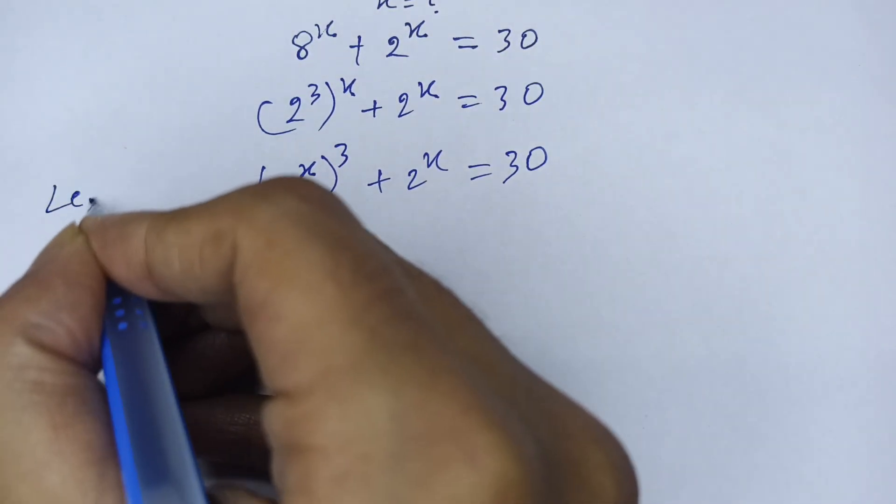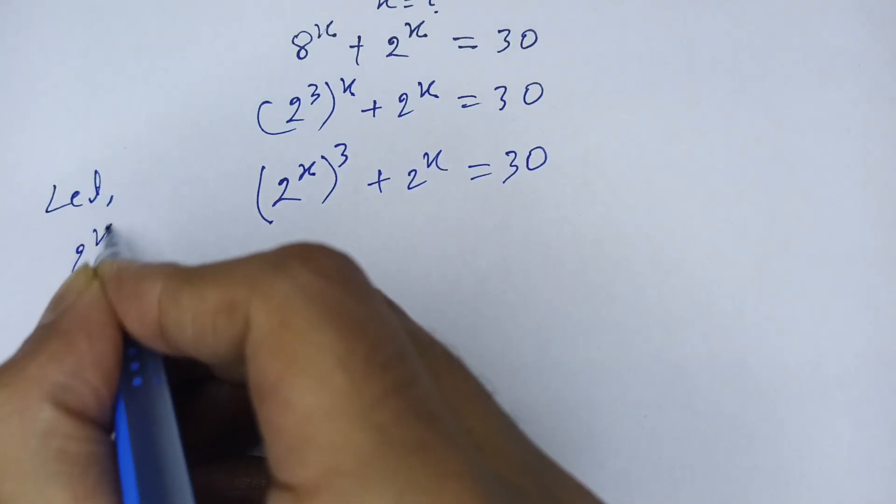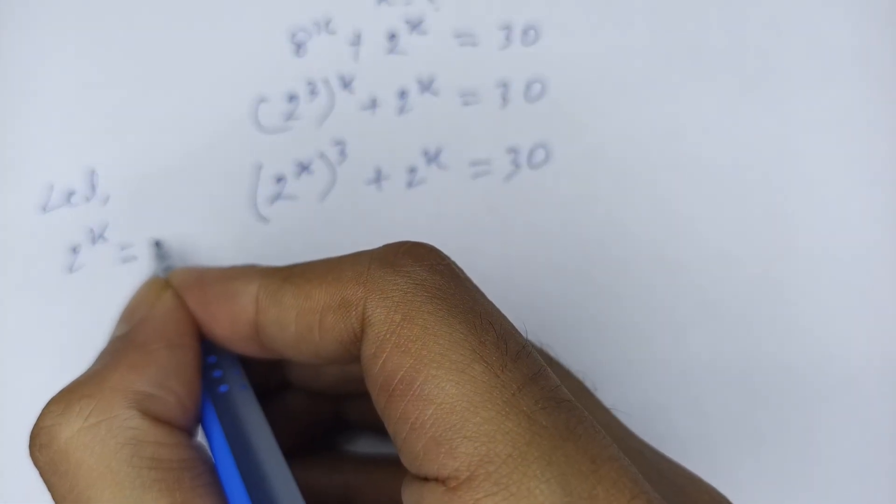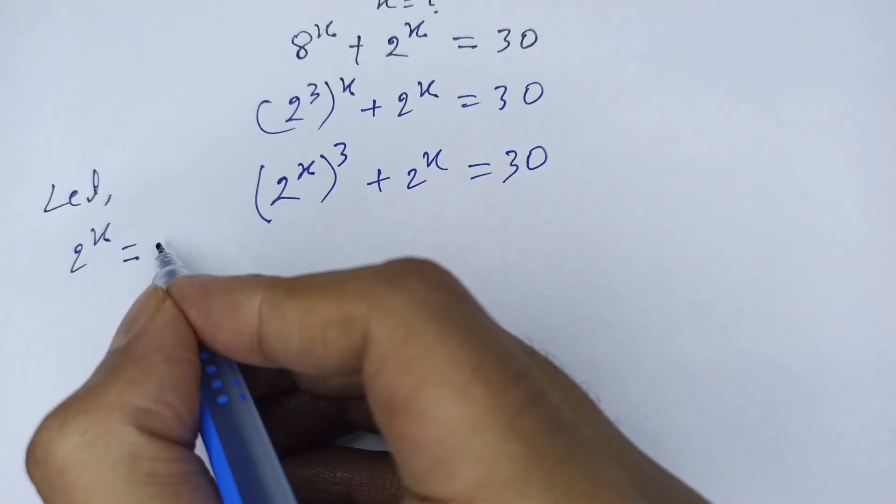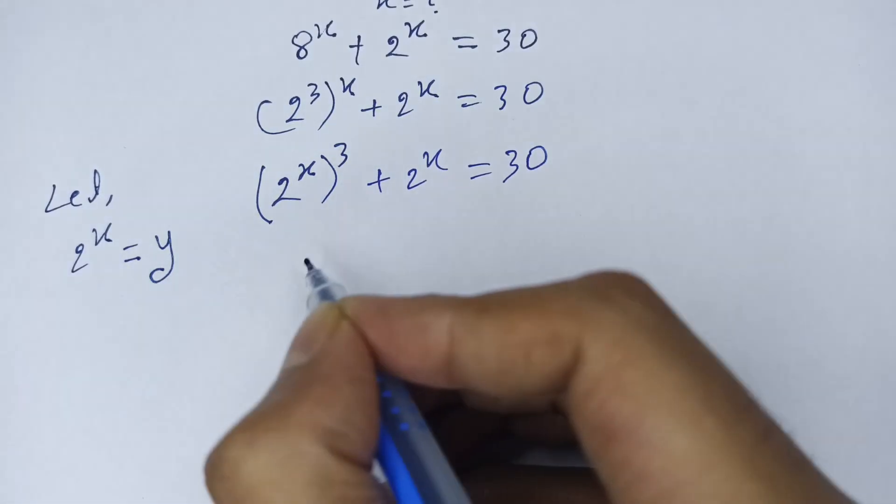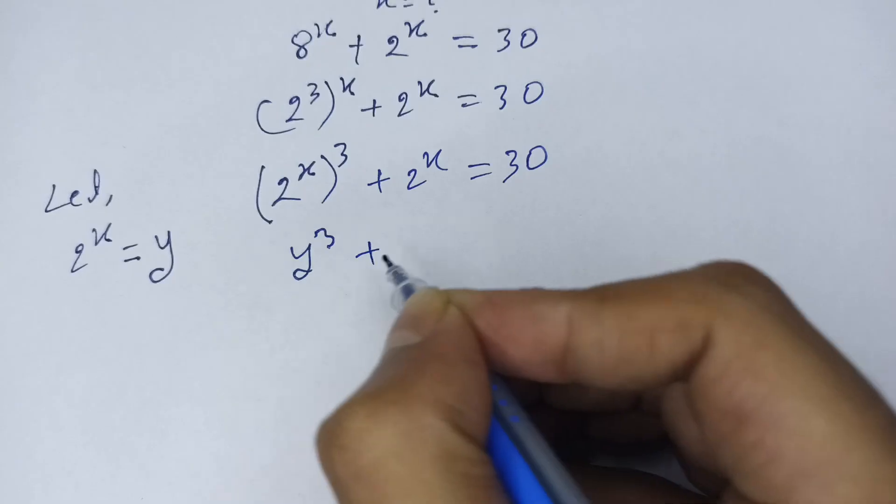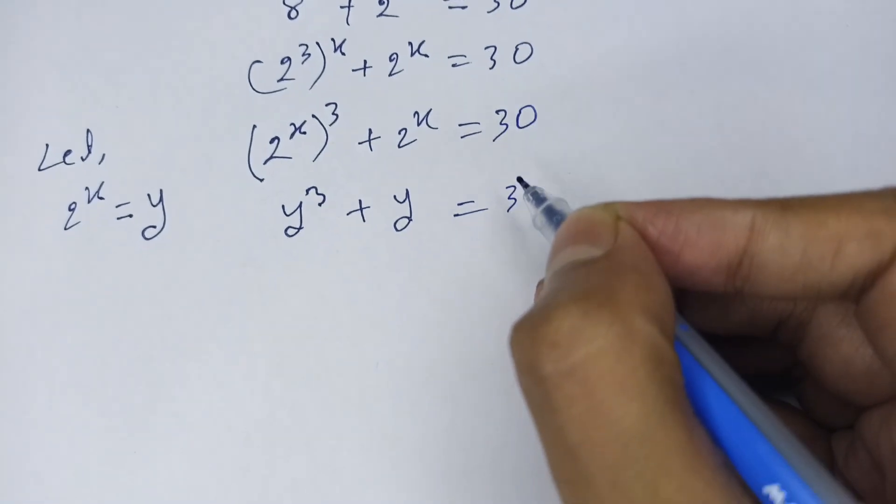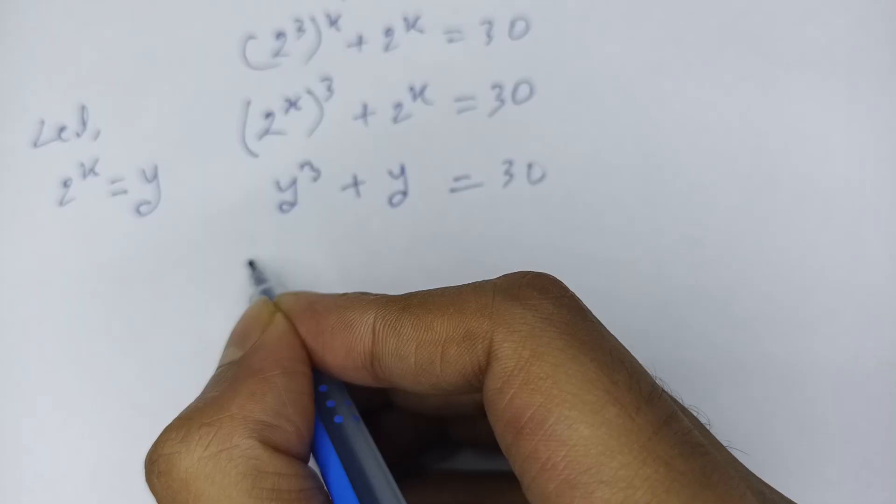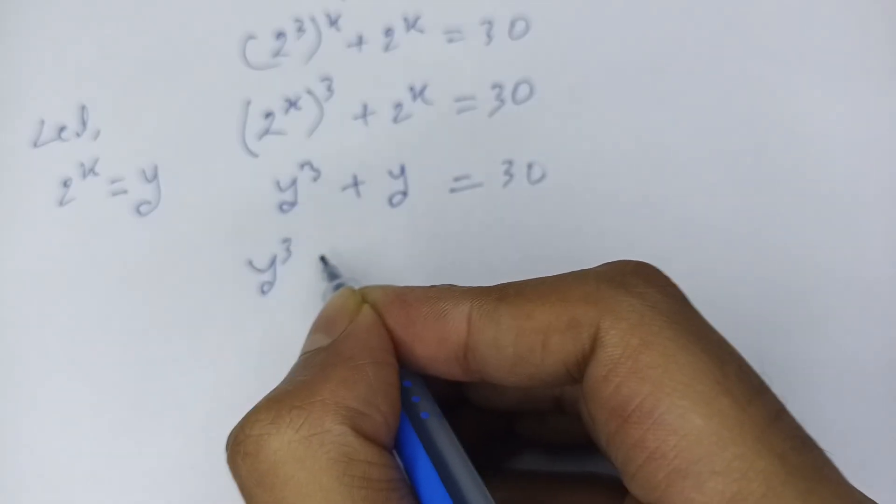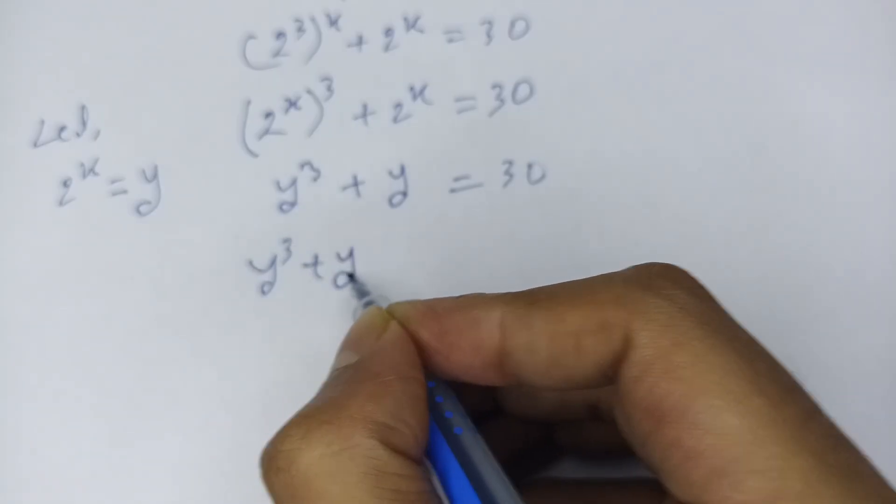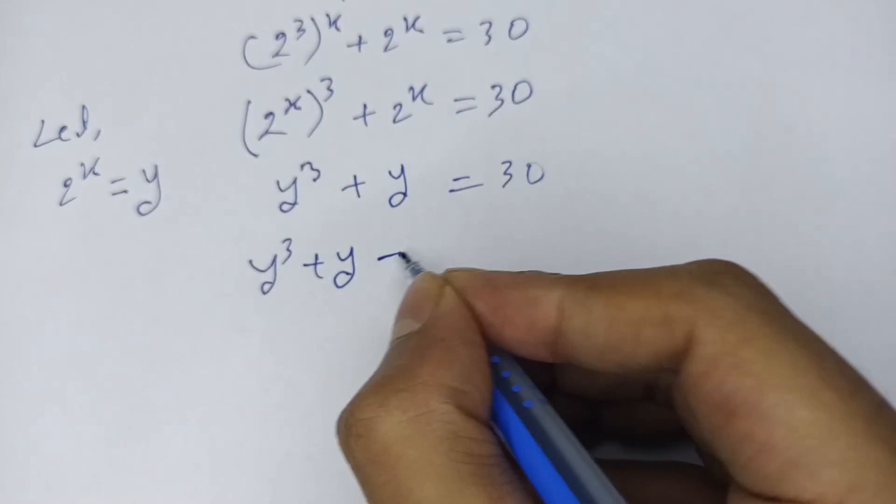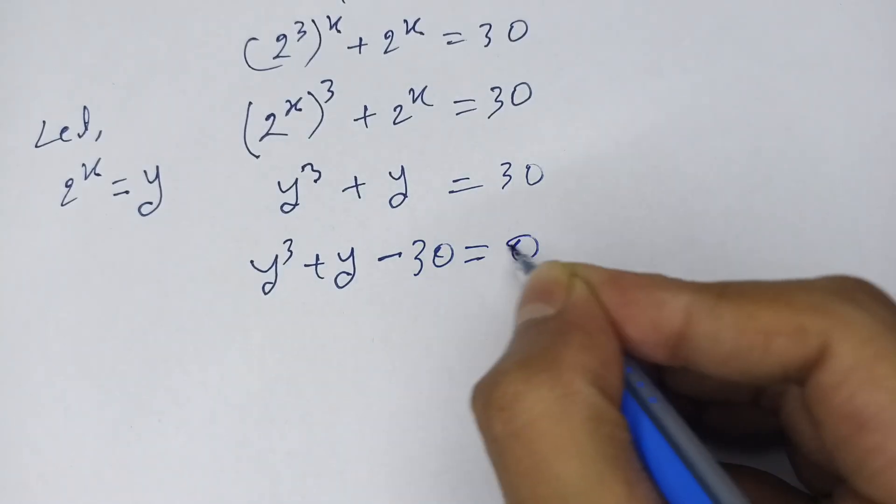Then, let 2 to the x equal y. Then y to the cube plus y, if I move 30 to the left side, so it is y cubed plus y minus 30 equals 0.